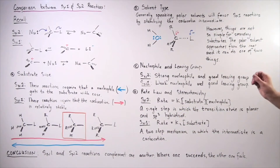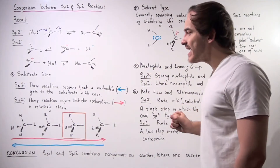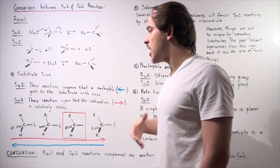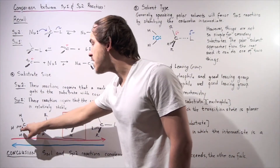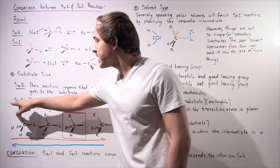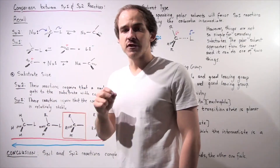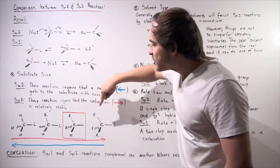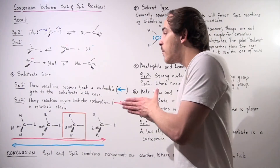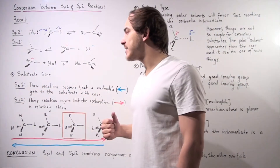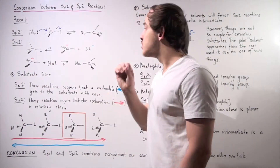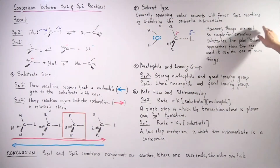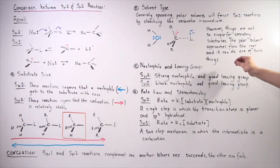However, things are not so simple for secondary substrates. SN2 reactions are favored for primary and methyl substrates, while SN1 reactions are favored for tertiary substrates. When we get to our secondary group, we can have both SN1 and SN2 reactions occurring. So we have to be careful — things are not so simple for secondary substrates. The polar solvent can approach from the rear.